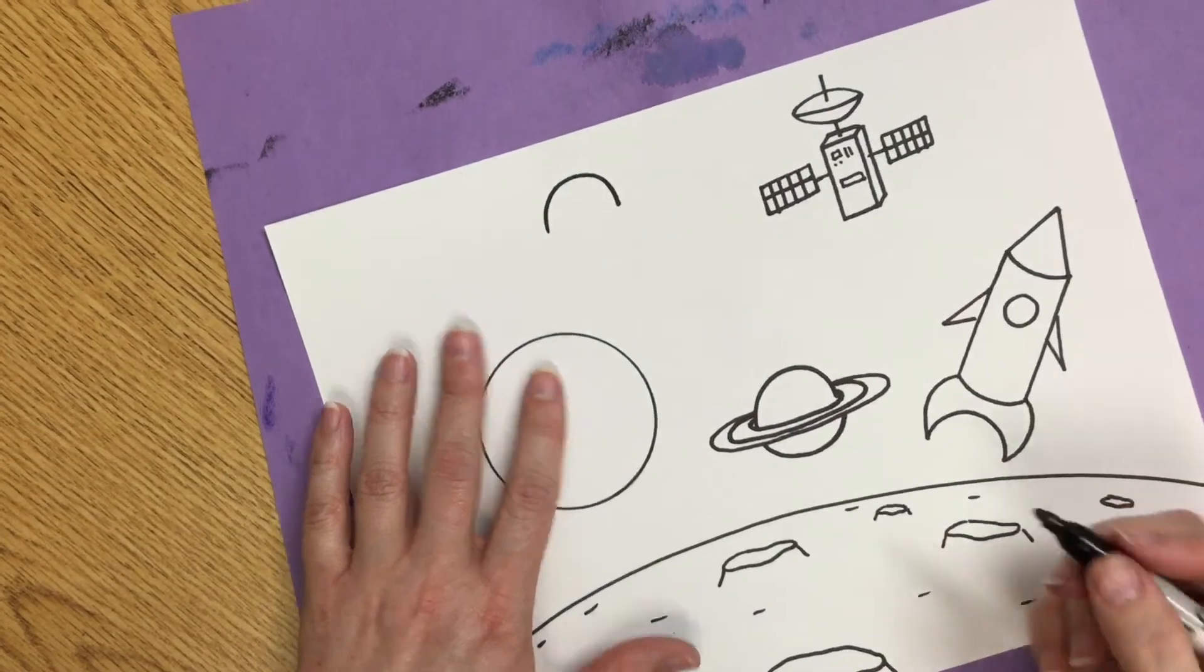You can also add a UFO if you'd like. So the UFO reminds me a lot of making this planet with the rings. So I'm going to start with half of a circle. And instead of doing the rings this time I'm going to just draw a curve, a little bit of a curve across the bottom because this is going to be round.